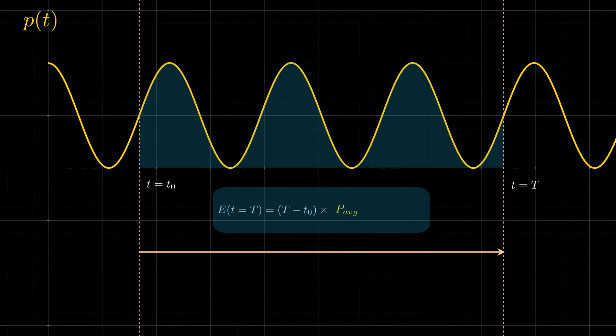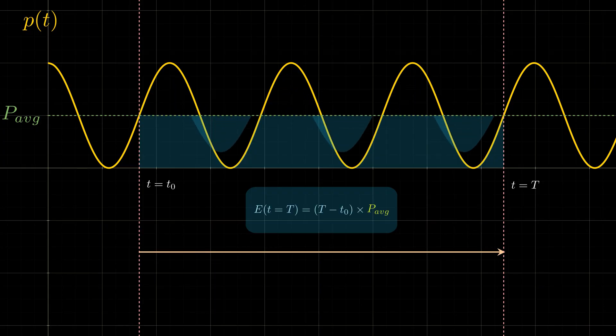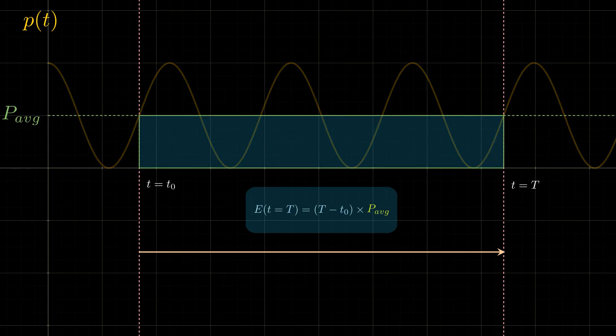We can also show this visually. Let's start by plotting a horizontal line at average power. This line slices the surfaces into upper and lower parts. We can now rearrange the surfaces to get a rectangle of width T minus T0 and height equal to the average power.